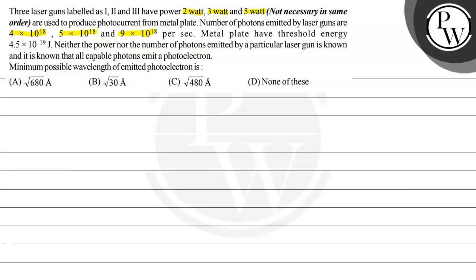The metal plate has a threshold energy of 4.5×10⁻¹⁹ joules. Neither the power nor the number of photons emitted by a particular laser gun is known, and all capable photons emit a photoelectron. The question asks: what is the minimum possible wavelength of the emitted photoelectron? We have 4 options to choose from.